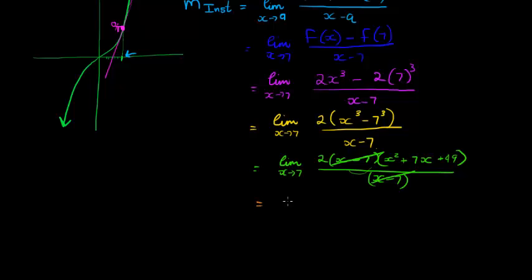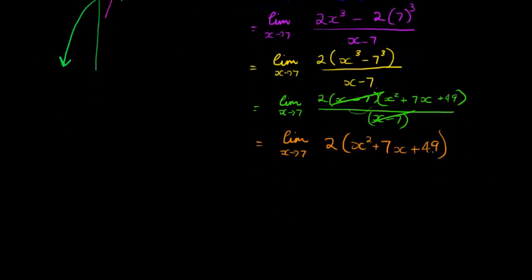So now we have that the limit of x tending to 7 of 2x squared plus 7x plus 49. And now I can just substitute. Let's substitute, see what we get. Why can I substitute? Because there's no denominator anymore. Substituting now does not make my denominator equal to 0. So then I'm allowed to do it.